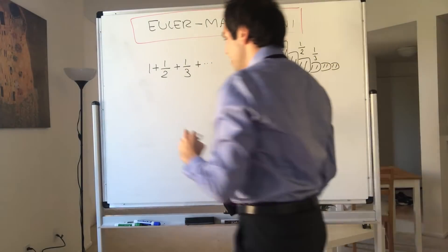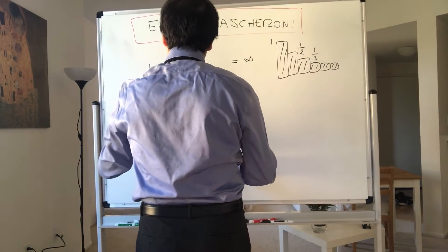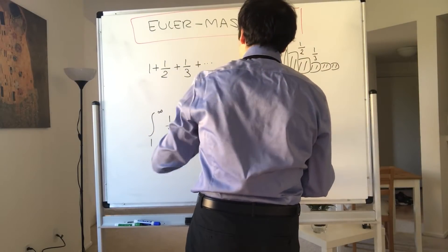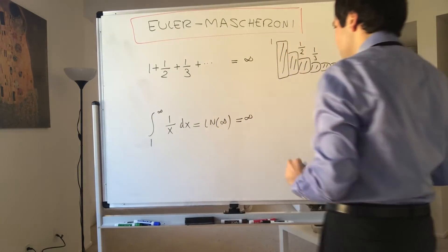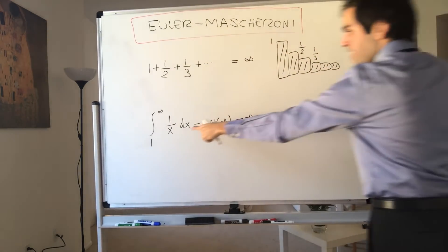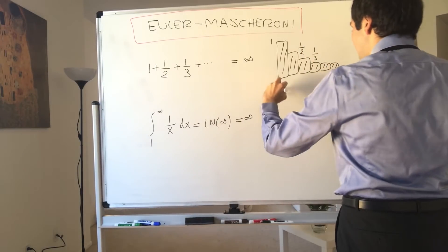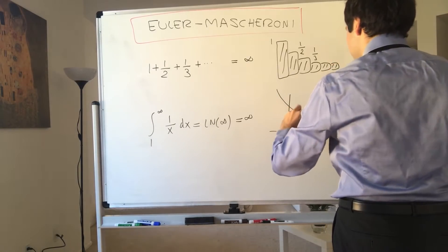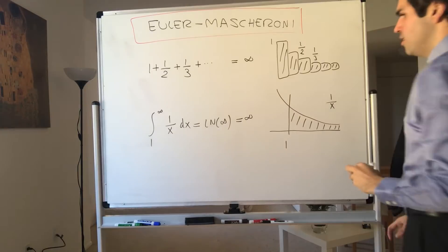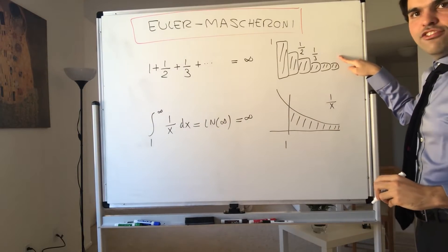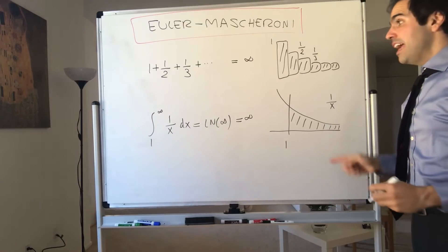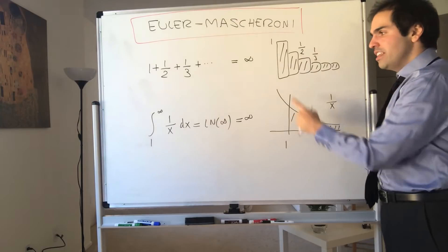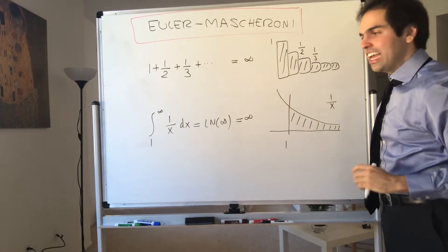On the other hand, we have the integral from one to infinity of one over x dx, which is just ln of infinity, and that's infinite. In terms of areas, this is just the area under the function one over x from one to infinity. So this area is infinite, and this area is infinite. It turns out, though, if you take the difference between these two, you actually get a finite number.